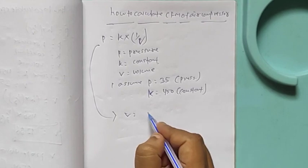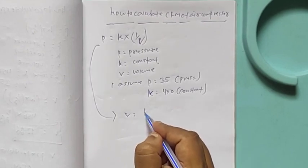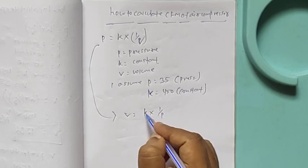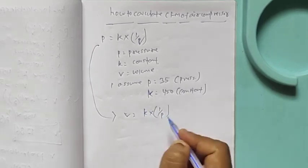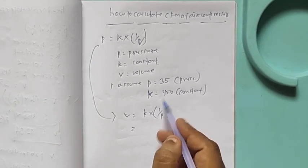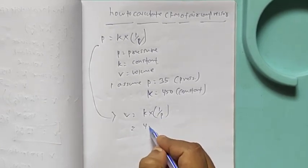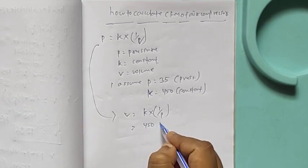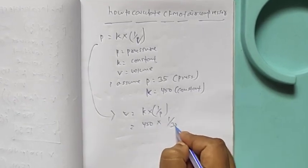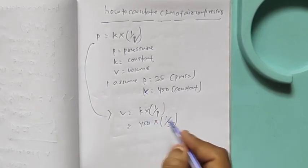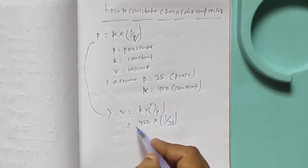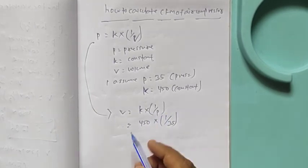Then, V equal to K into 1 by P. Then I put this value, 450 into 1 by 35. I assume this value.